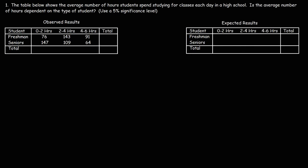The first thing we need to do is complete the contingency table, so let's find the totals of each column. 76 plus 147 is 223. 143 plus 109 gives us a total of 252. 91 plus 64 is 155. Now let's find the total of the last row: 223 plus 252 plus 155 gives us a total of 630.